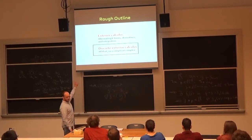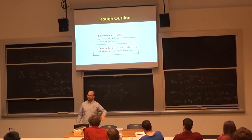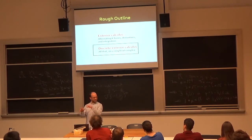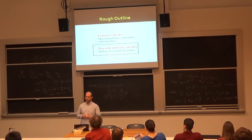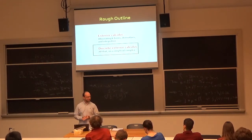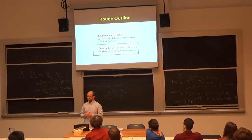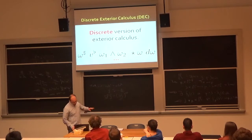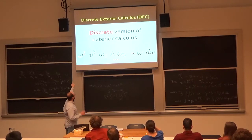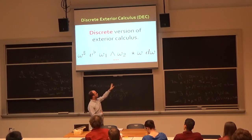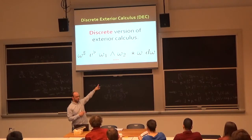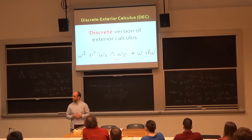Discrete exterior calculus is the discrete version of everything we did — with sharps, flats, star, and d. Wedges are difficult but star and d we can write as simple matrices. This gives us div, grad, curl, and the Laplacian as just a couple of simple matrices. A triangle mesh, as long as it's not a Möbius strip, is an oriented simplicial complex. We assign an orientation to every element. We also have a dual mesh: every triangle becomes a vertex, every edge becomes a flipped edge.